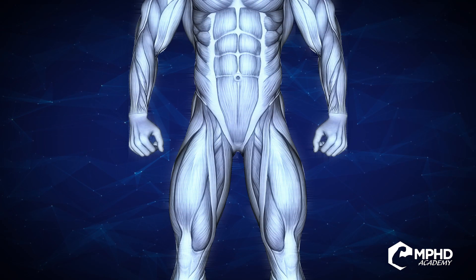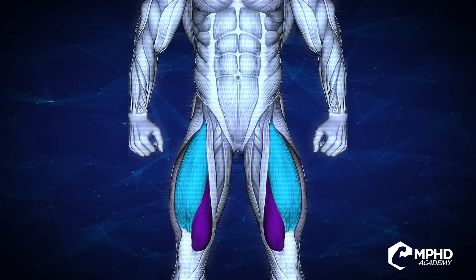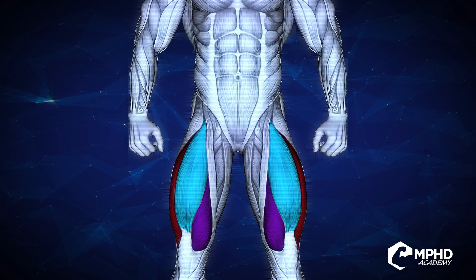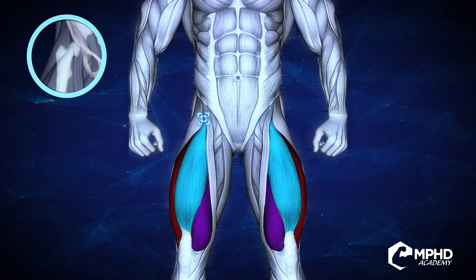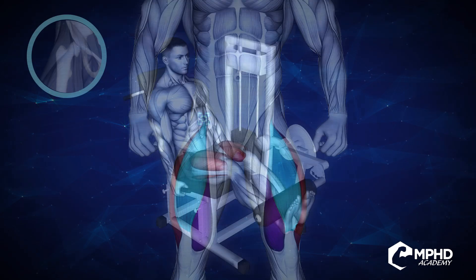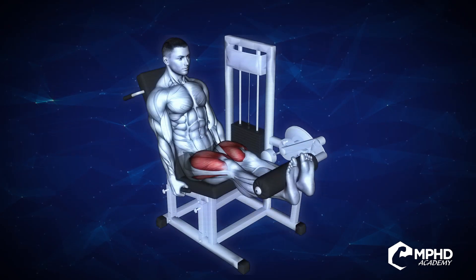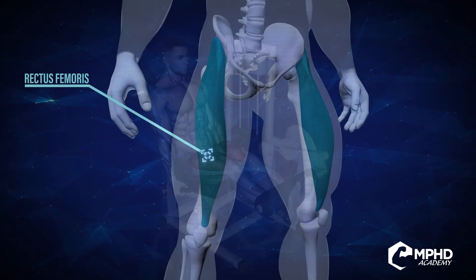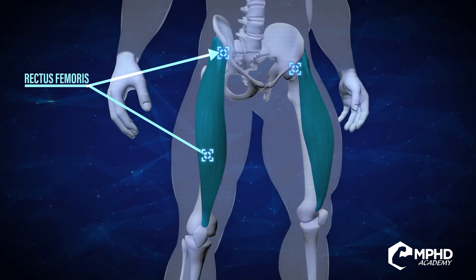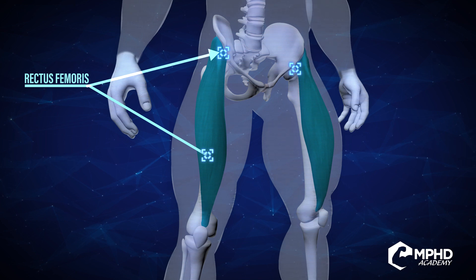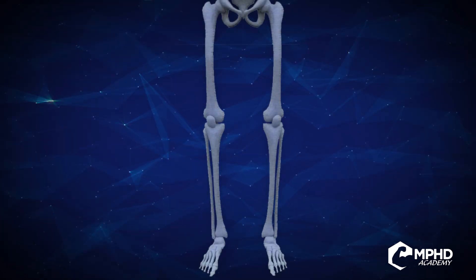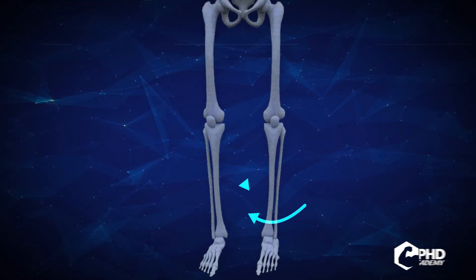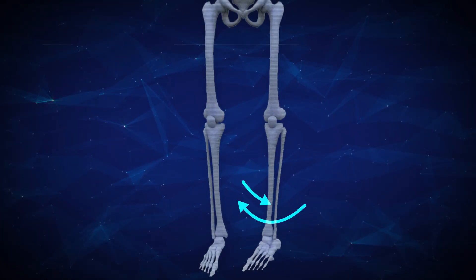To summarize: the quads can be divided into four heads. The vastus muscles all originate on the femur, and their main action is to extend the leg. The rectus femoris crosses the hip joint and thus can flex the hip and extend the knee. The quads also act to internally and externally rotate the knee.